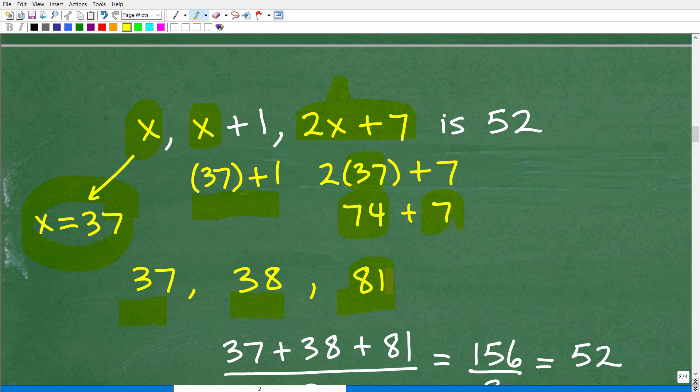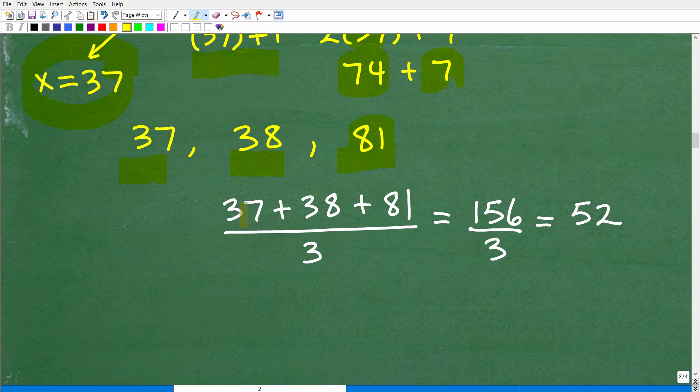So the average of these three numbers should be 52, right? So the average of 37, 38, and 81 should be 52. Well, let's go ahead and check that. Let's go ahead and just see how well we did. So 37 plus 38 plus 81, if we're going to find the average of these three numbers, we're going to add them up, divide by 3. And when we add these numbers up, we get 156. Divide 156 by 3, you get 52. Okay, so now this is when you can be super excited.